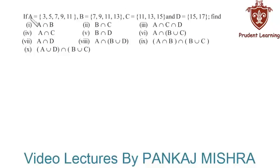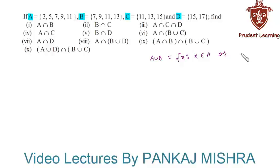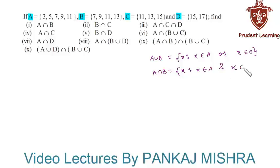In this question we have four sets A, B, C, and D. With this information we need to find the values of the given operations. Before solving the question, let us recall the definition of union and intersection. A union B is equal to the set of x such that x belongs to A or x belongs to B. A intersection B is equal to the set of x such that x belongs to A and x belongs to B. Keeping this definition in mind, let us try to solve each section of the given question one by one.